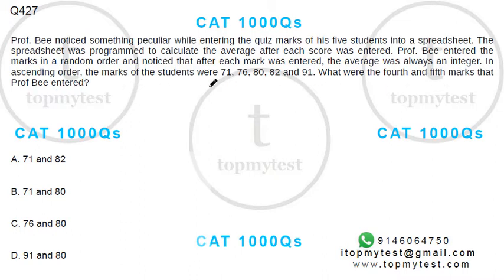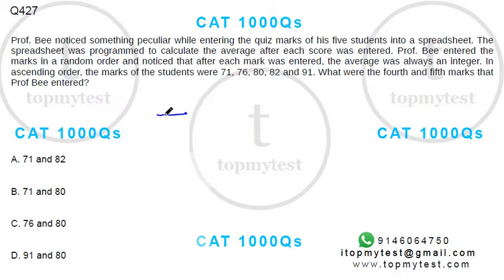The marks were as follows — this is not the order in which he entered them; this is the ascending order of marks. The question is: what were the fourth and fifth marks that he entered? The spreadsheet program works like this: you enter the first mark, and it gives you the average of that one mark.